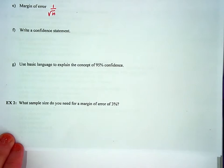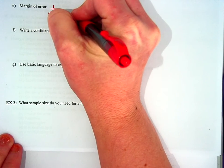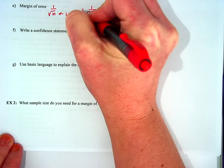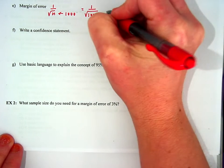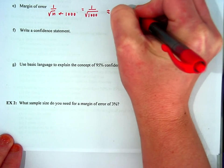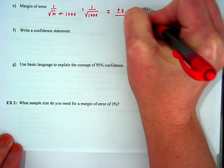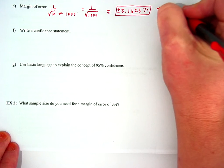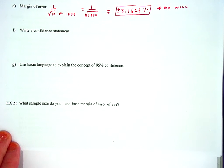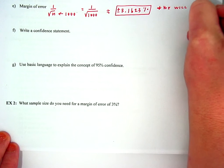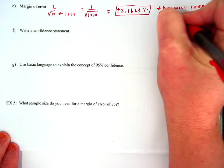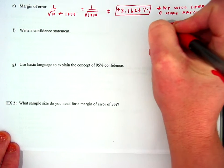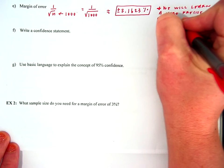Our margin of error is 1 over the square root of n. n is our sample size, so I'm plugging in 1,000. So 1 over the square root of 1,000 gives us about plus or minus 3.1623% as our margin of error. I'll note that we will learn a more precise formula or method for calculation soon.